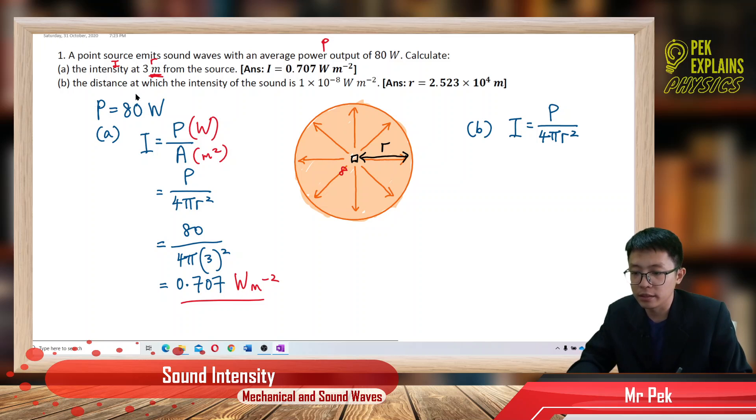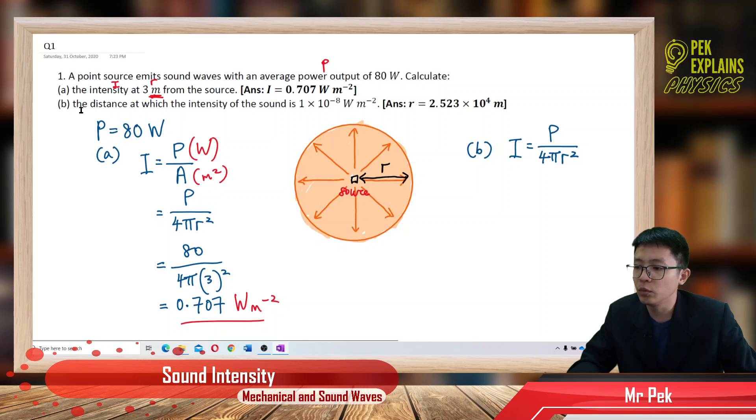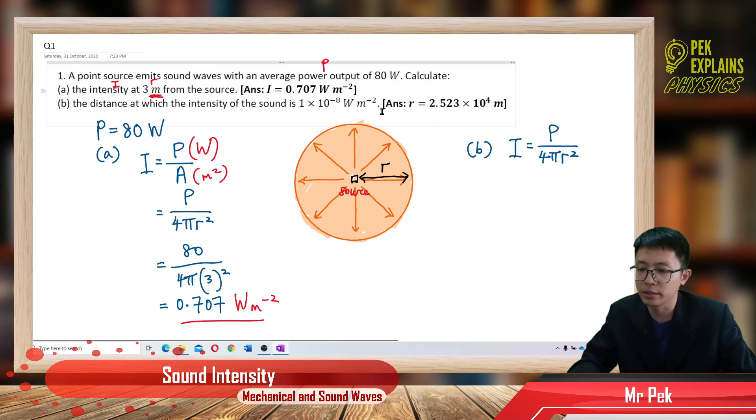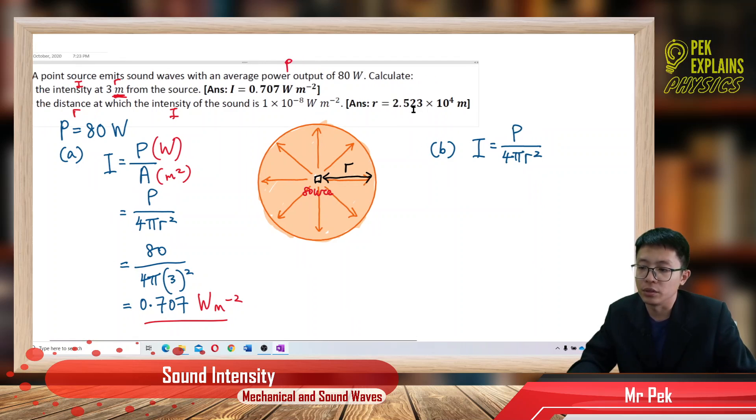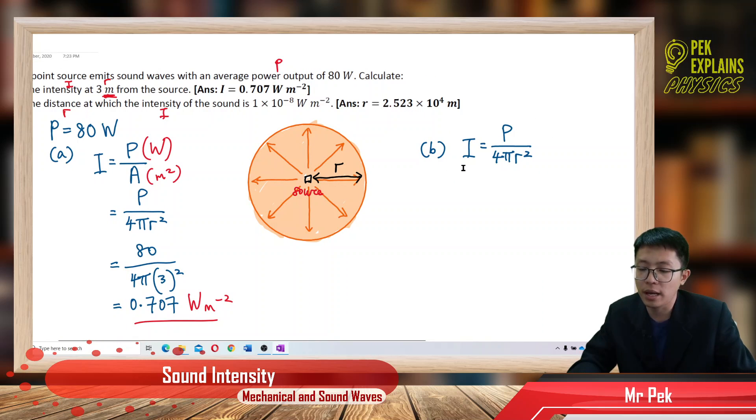Now, this is the center is the source. Now, what is the distance at which the intensity of sound become 1 exponent negative 8 Watt per meter square? What distance? I'm asking for R. You want the R. The intensity is this value. So, again, you use back the formula. I equal to power over area. Area is a sphere. 4 pi R square.